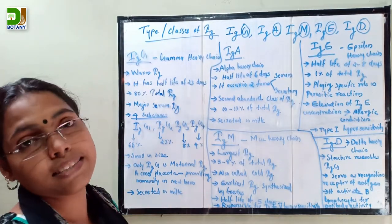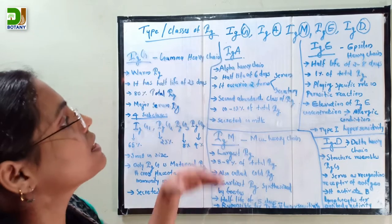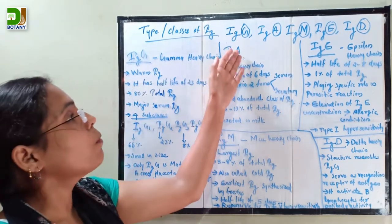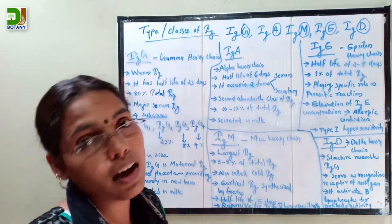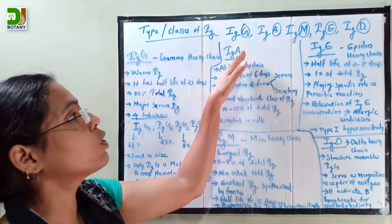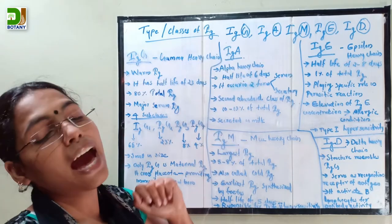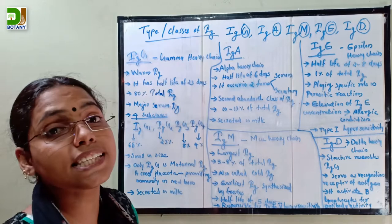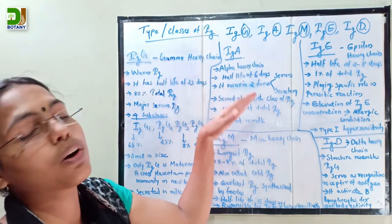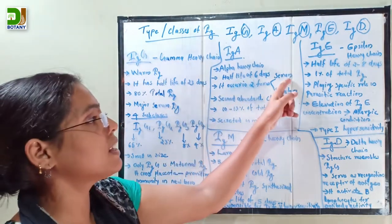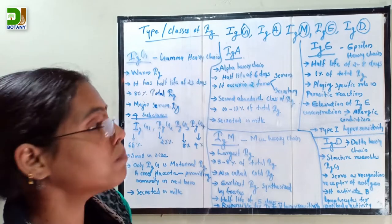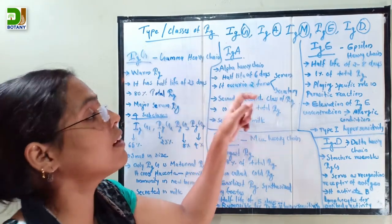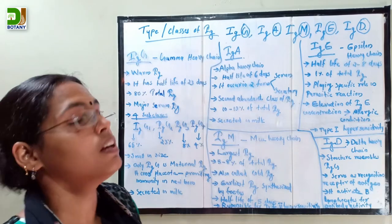The second type is immunoglobulin A. Immunoglobulin A contains alpha heavy chains. The half-life of immunoglobulin A is six days. It occurs in two forms: serum form and secretory form. It is considered the second most abundant class of immunoglobulin.